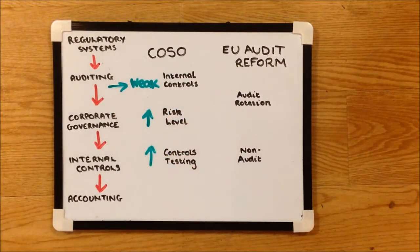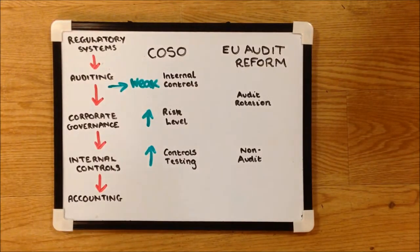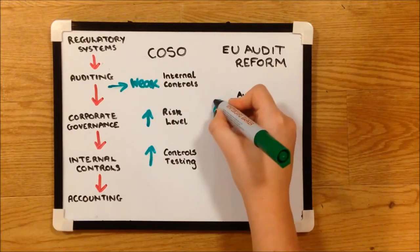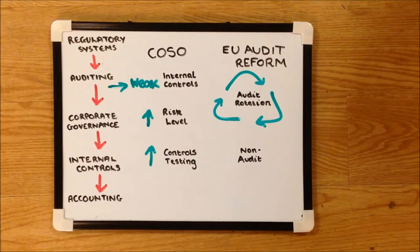Also, by following the EU audit reforms that are currently being implemented, Tesco can protect themselves from threats to independence. To reduce the familiarity threat, audits now need to be put up for tender every 10 years, and there is compulsory auditor rotation at least every 20 years.